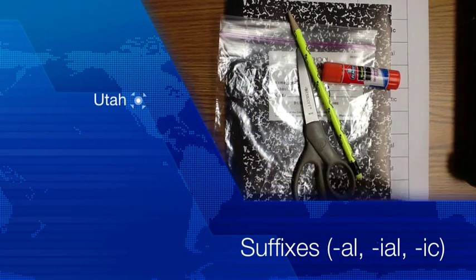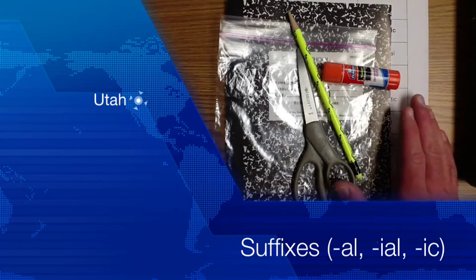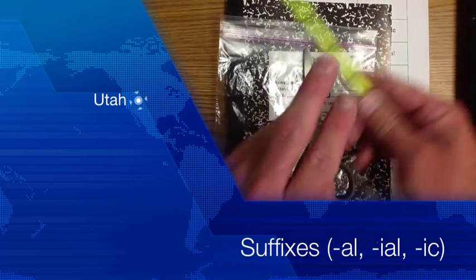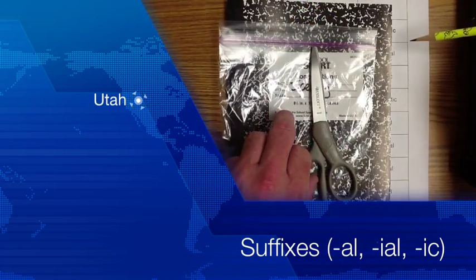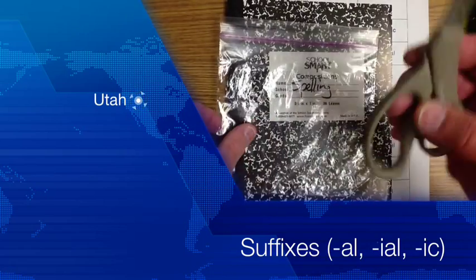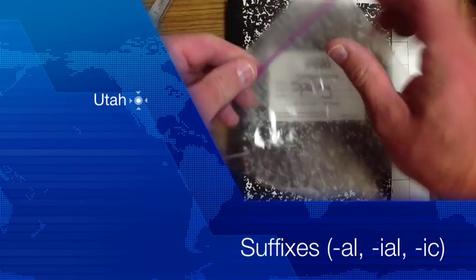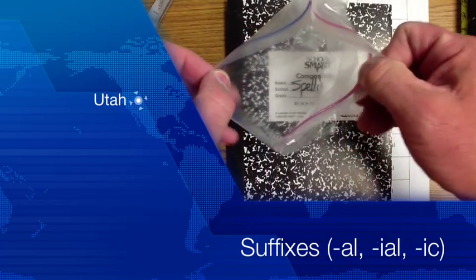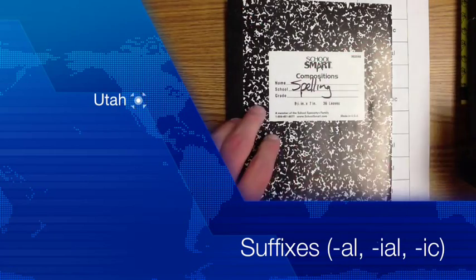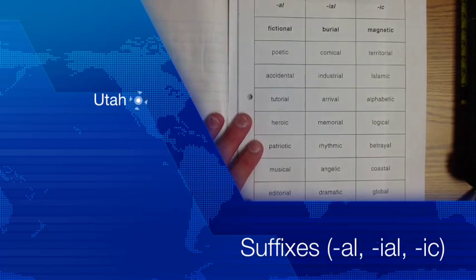Welcome to the spelling netcast for this week. Make sure you have your glue stick, your pencil sharp so you can write neatly, scissors so you can cut out your words, and your zip top bag to put your words in for tomorrow night's sort. You need your spelling book and your spelling words.